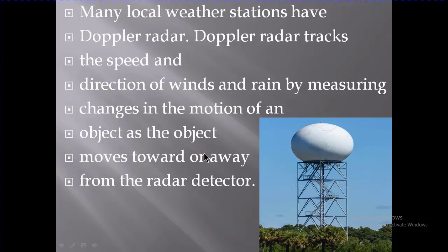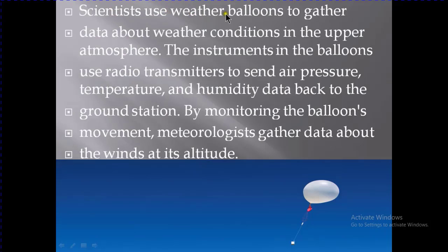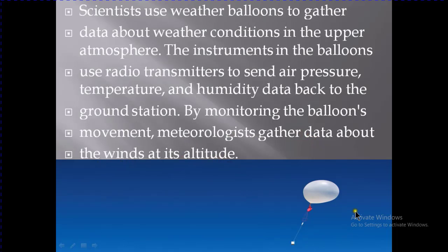Scientists also use weather balloons to gather data about weather conditions in the upper atmosphere. These balloons have different types of transmitters and detectors attached to them. The instruments in the balloon use radio transmitters to send air pressure, temperature, and humidity data back to the ground station. By monitoring the balloon's movement, meteorologists gather data about wind at as high an altitude as the balloon can reach.